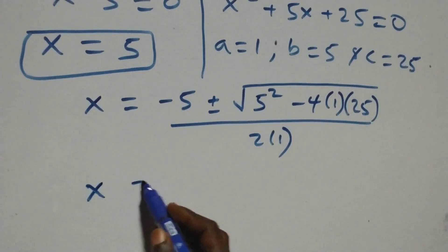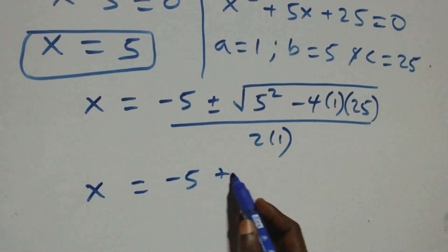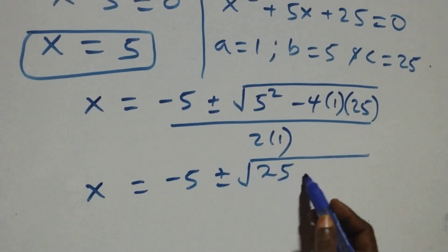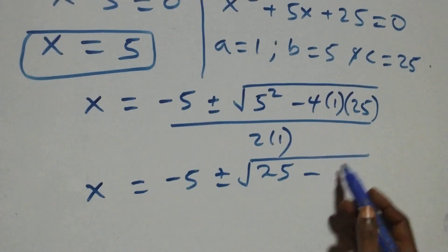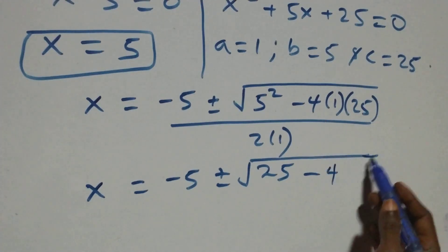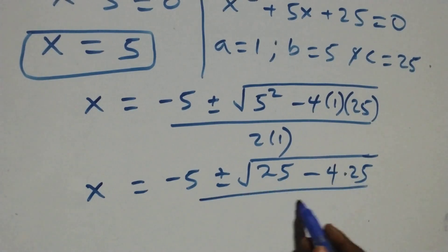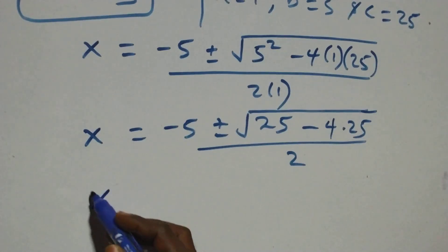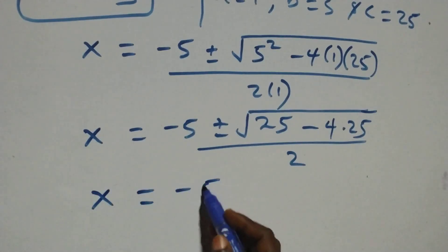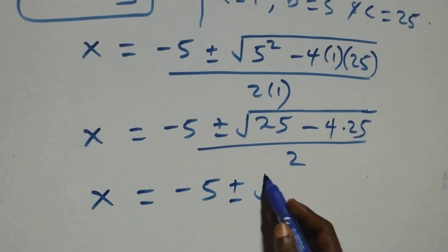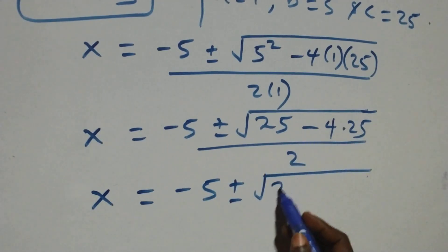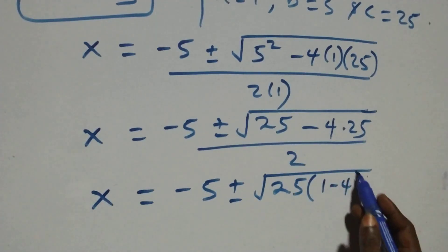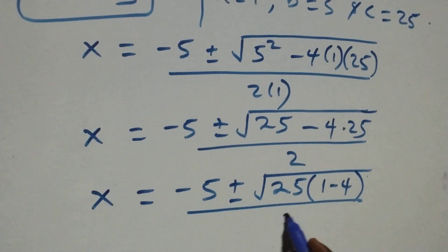We have x equals to minus 5 plus or minus square root of 25 minus 4 times 25. Factoring out 25 common, we have 25 into bracket 1 minus 4, then over 2.